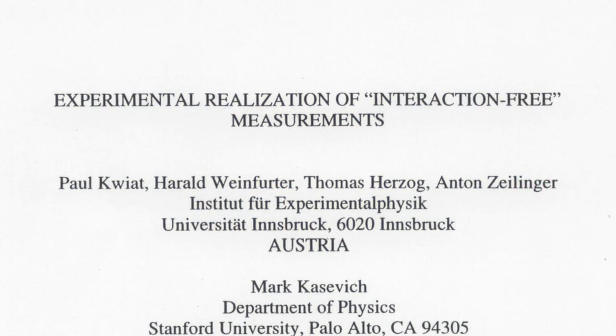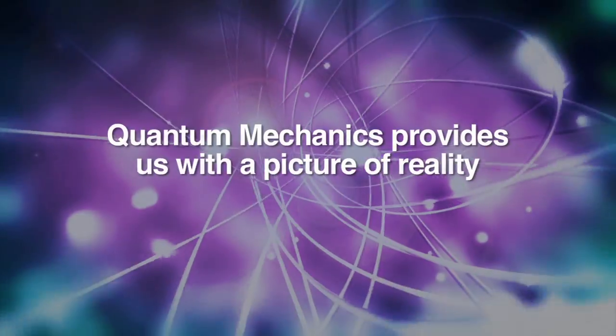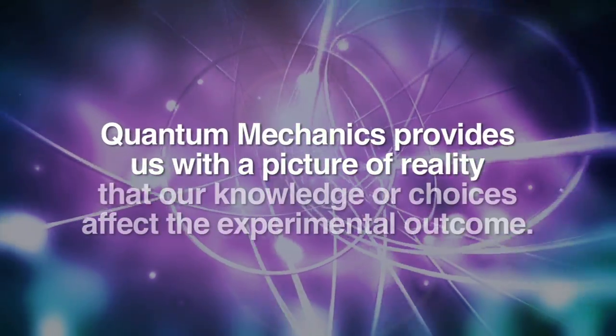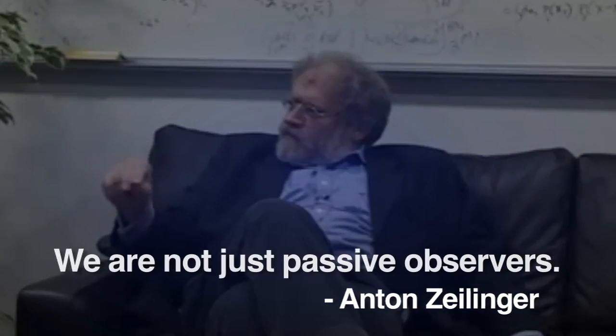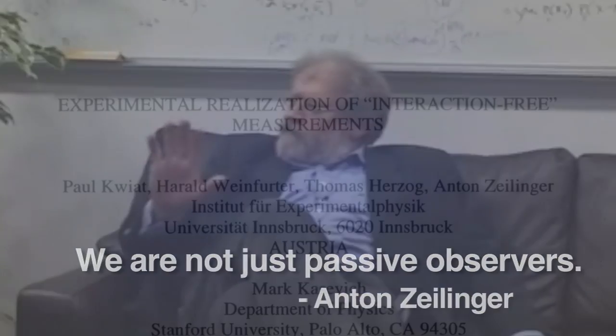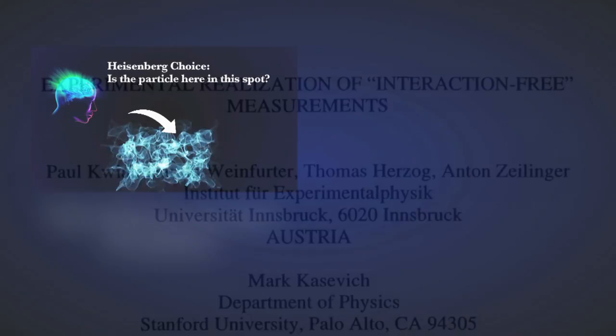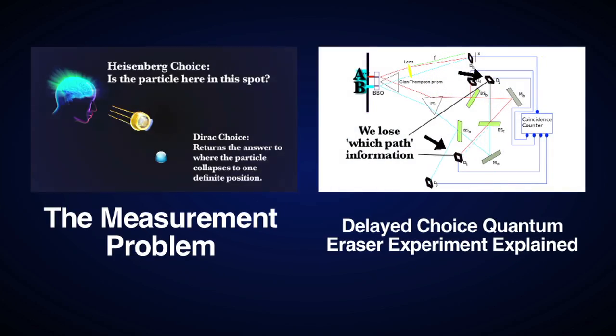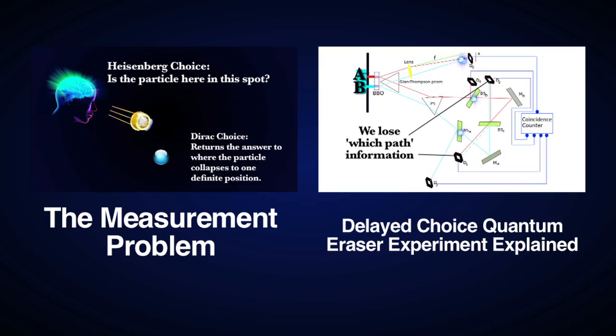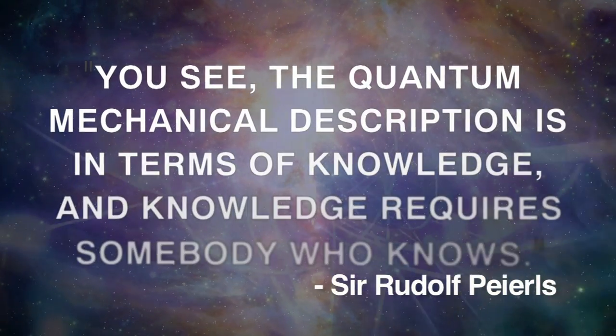The experiment coheres with the other data we have gone over. Quantum mechanics provides us with a picture of reality that our knowledge or choices affect the experimental outcome. As Anton Zellinger says, we are not just passive observers, and this experiment provides excellent evidence of this, and correlates with the mountain of data we have already gone over in previous videos. The conclusion is inescapable. As Sir Rudolph Pierce said, you see, the quantum mechanical description is in terms of knowledge, and knowledge requires somebody who knows.